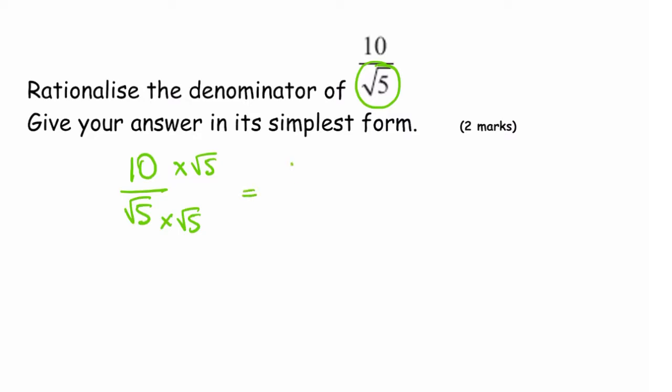So on the top we have 10 root 5, and at the bottom we have square root of 5 times by square root 5, which is square root of 25. If you simplify square root of 25, that gives us just 5. Let's go ahead and simplify the fraction now. Divide top and bottom by 5, and that will leave us with 2 root 5. That's the answer, worth 2 marks.